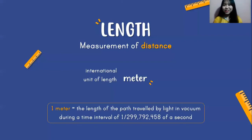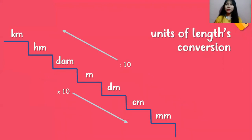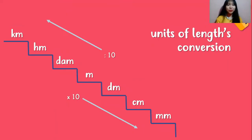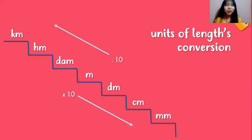I have the staircase of the length units. Starting from the top: kilometer, hectometer, decameter, meter, decimeter, centimeter, and millimeter. Every time you go one step downward, you multiply the value by 10. And every time you go one step upward, you divide it by 10.